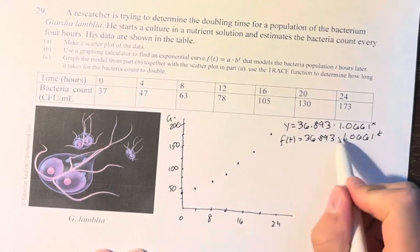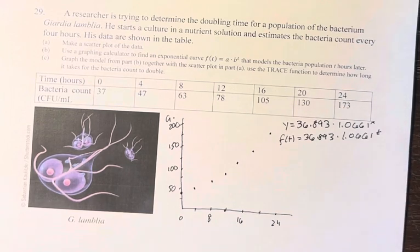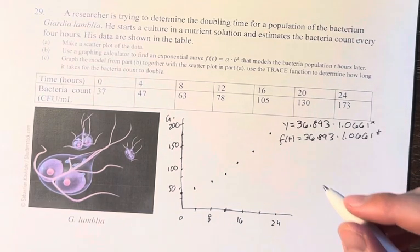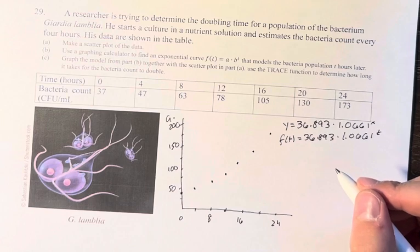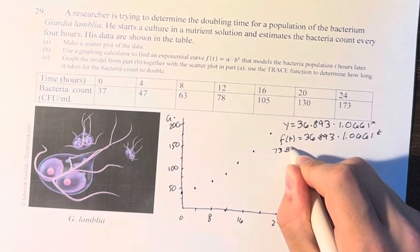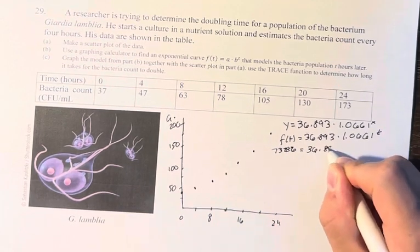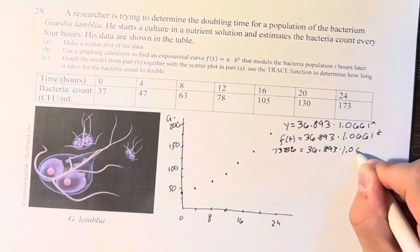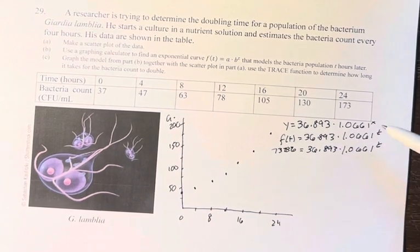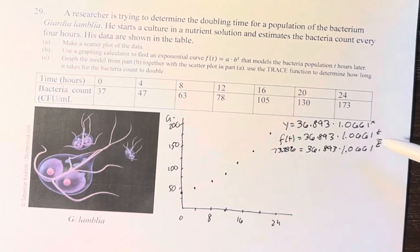So if we plug in 36.893 times 2, we have 73.786. If this equals 36.893 * 1.0661^t, this t is the time at which, for this particular function, f(t) equals 73.786, which we know is double of time equals 0, so this is also serving as the elapsed time.